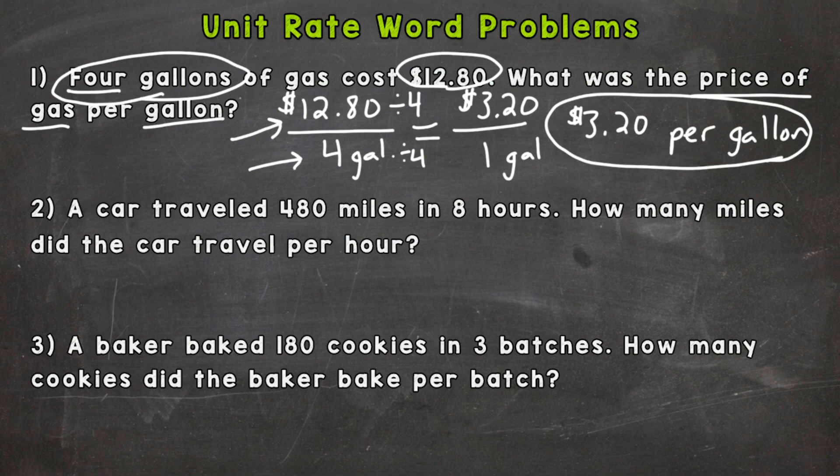Number two. A car traveled 480 miles in eight hours. How many miles did the car travel per hour? So we need to set up our fractional ratio keeping the order in mind. So let's check our question and it says how many miles did the car travel per hour?